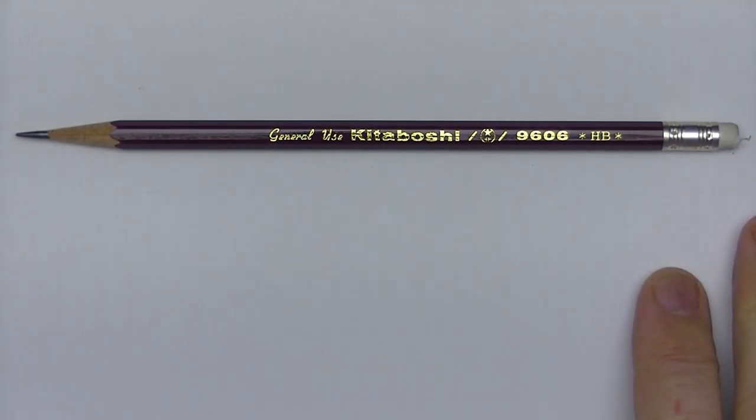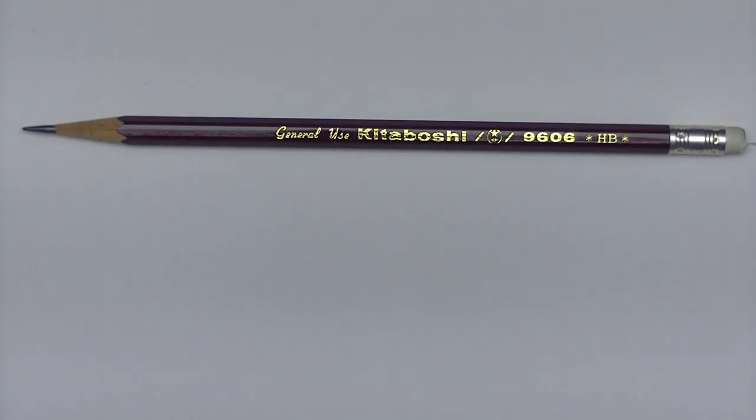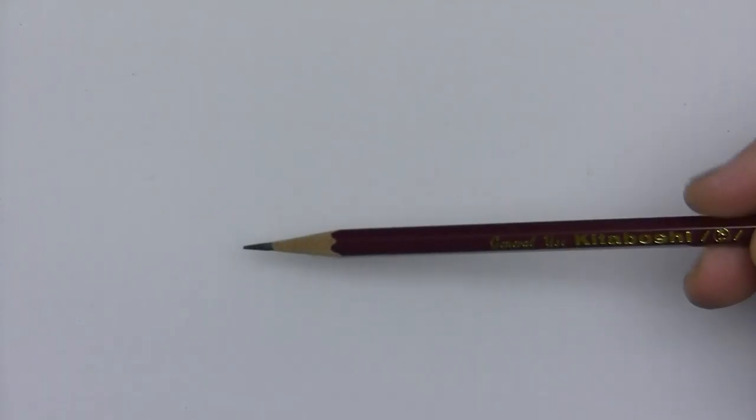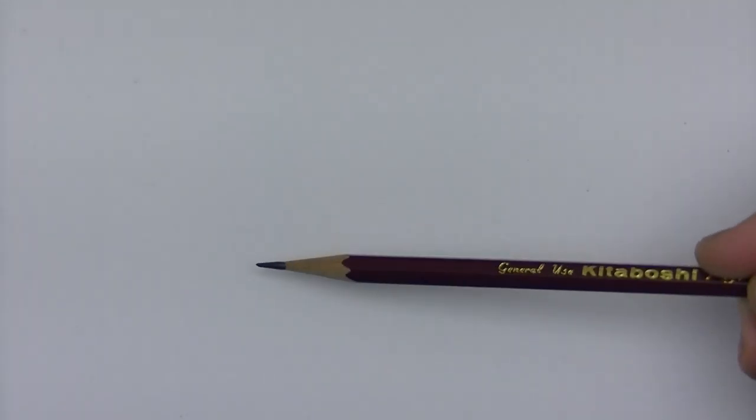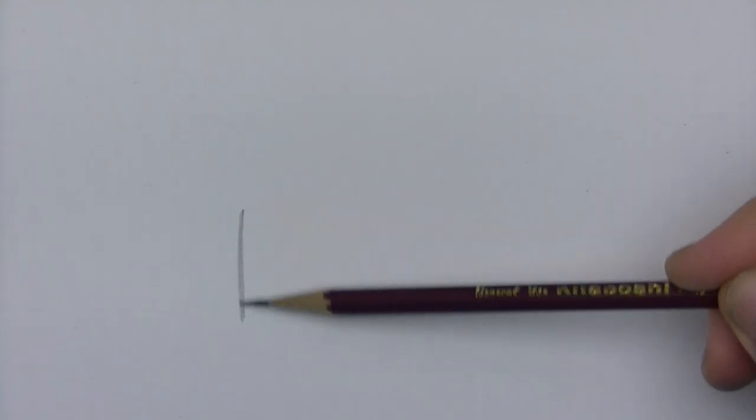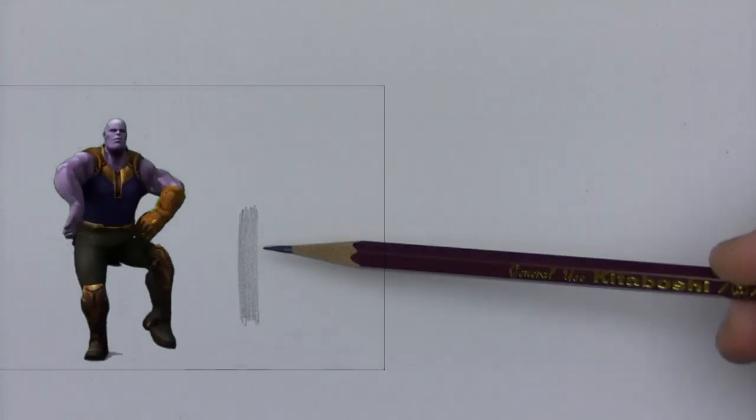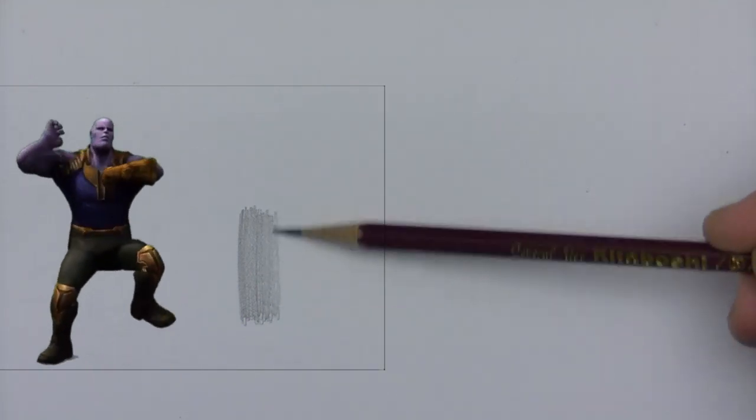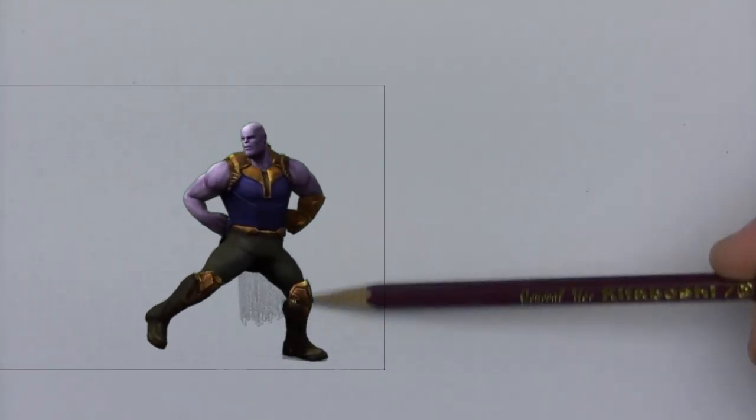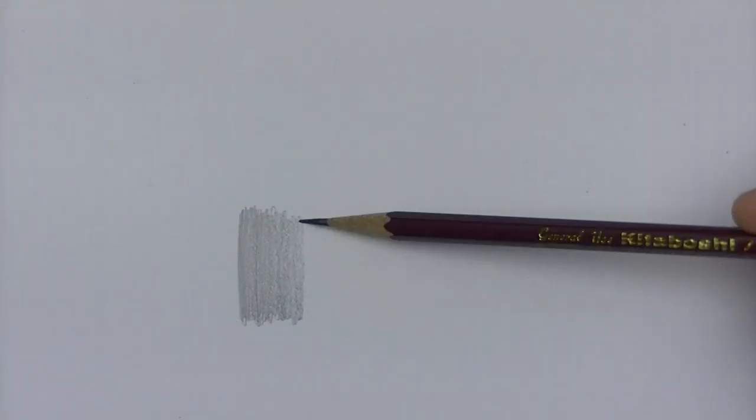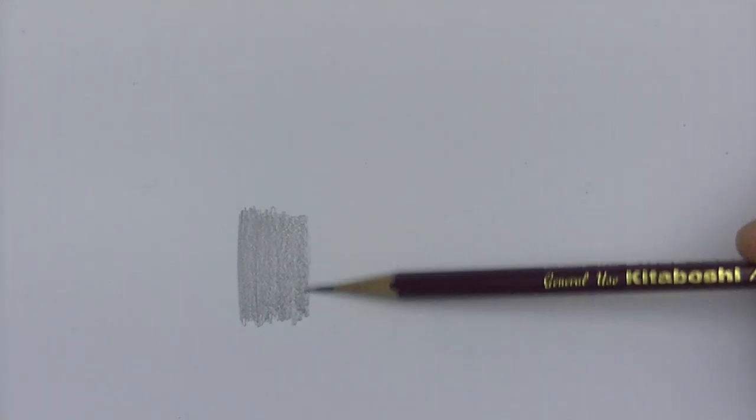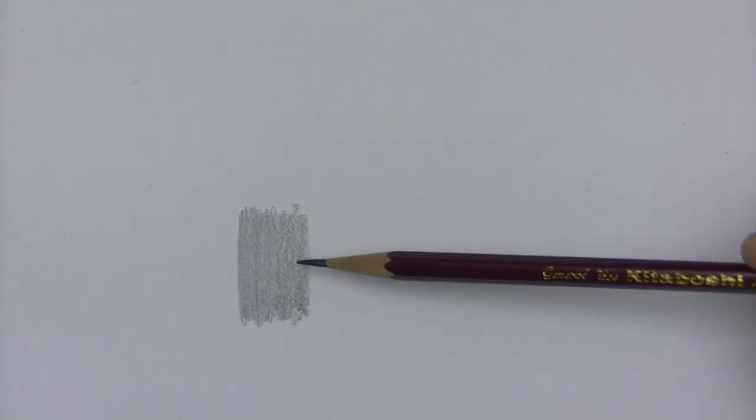I have 90-pound drawing paper here, this is the smooth side, and I'm going to take this Kitabashi 9606 pencil and draw a nice swatch in the center here for comparison purposes. This goes on really nice and soft, and I find this as a writing pencil that it is really enjoyable to write with.